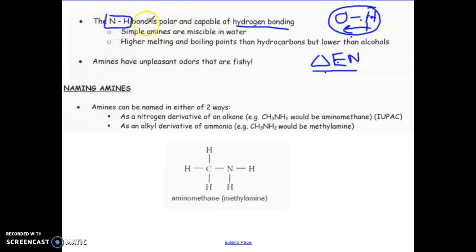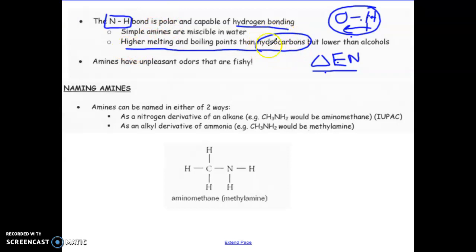Most amines are miscible in water — they're polar, so they dissolve in polar solvents. They have higher melting and boiling points than hydrocarbons like regular alkanes and alkenes, but still lower than alcohols, for the reason just mentioned regarding electronegativity differences.